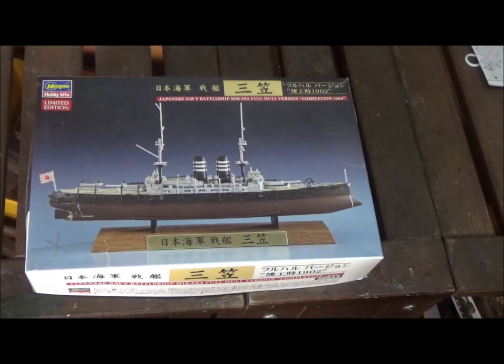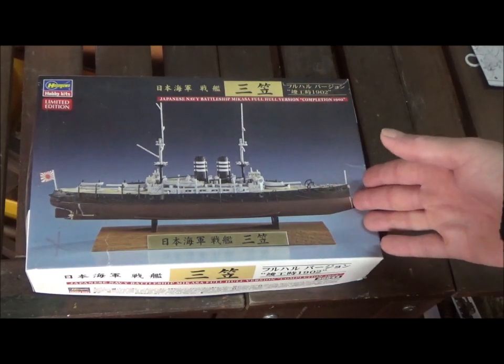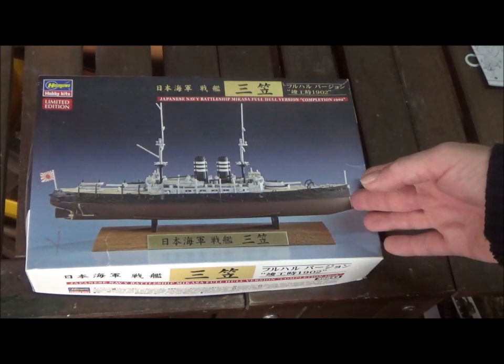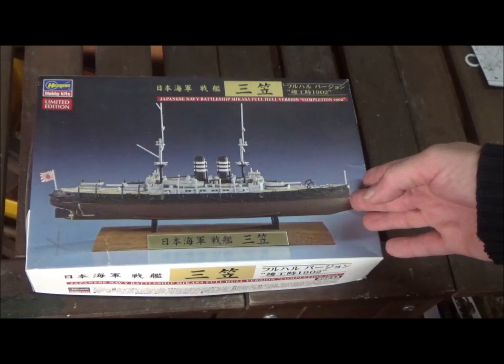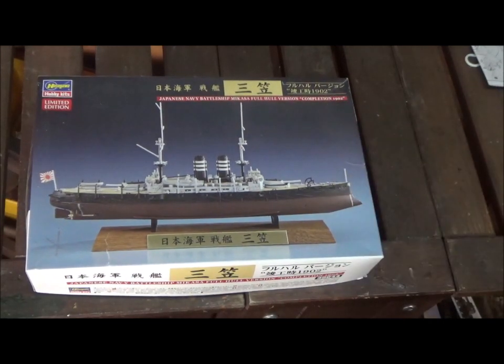Today we're taking a look at this 1-700 scale battleship Mikasa from Hasegawa. It's a nice looking ship. This is a pre-war ship back before World War I. You see here 1902. This took part in a battle against the China Sea, I think.